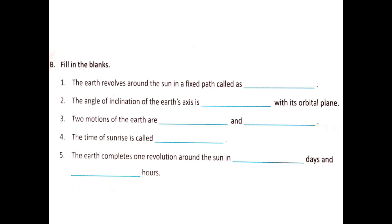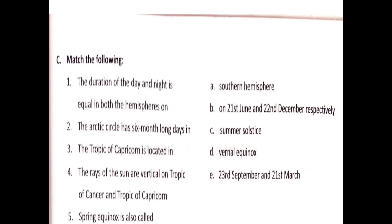Match the following of this chapter. Question 1: The duration of the day and night is equal in both the hemispheres on 23rd September and 21st March.